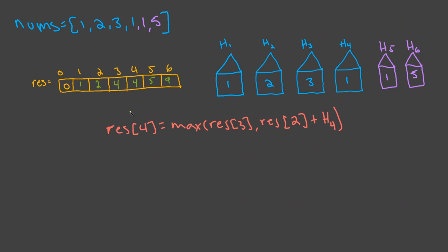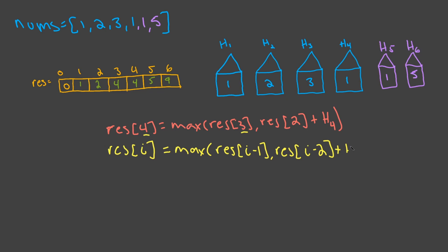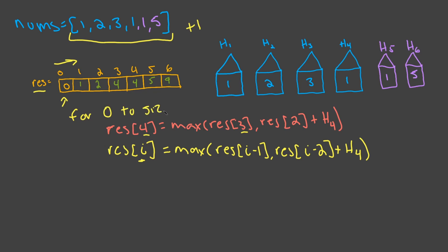Generalizing: result[i] = max(result[i-1], result[i-2] + current_house_value), where i iterates over the result array. The size of the result array is len(nums) + 1 to include space for the base case. Our full algorithm is a for loop from 0 to len(nums) + 1.